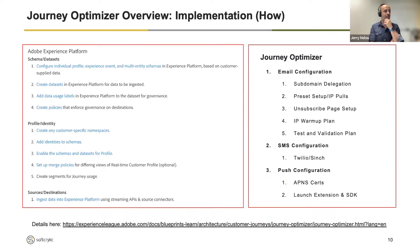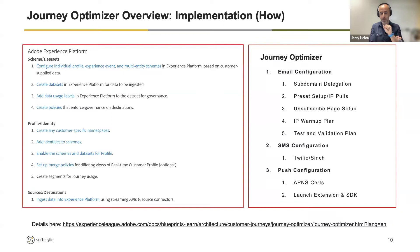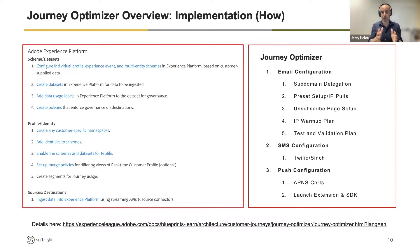From there we stood up the specific datasets and feeds, and now within AEP we have our profiles, the attributes associated with them, and we can see our unified profile and start building segments on top of it. So once that piece is done, the second piece is getting Journey Optimizer ready.